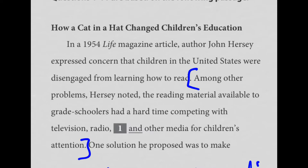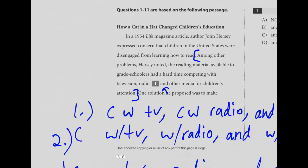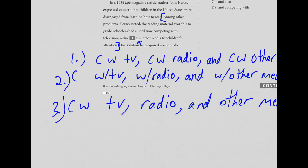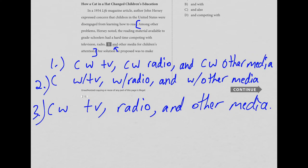Number one is about this sentence: 'Among other problems, Hersey noted, the reading material available to grade schoolers had a hard time competing with television, radio, and other media for children's attention.' The underlined portion is the word 'and.' This is a parallel structure question. There are three possible ways to maintain parallel structure. You could say 'competing with TV, competing with radio, and competing with other media' — all three get the verb and the preposition. That works.